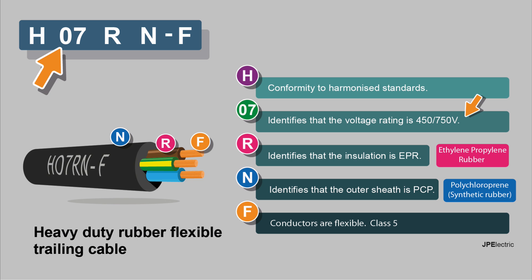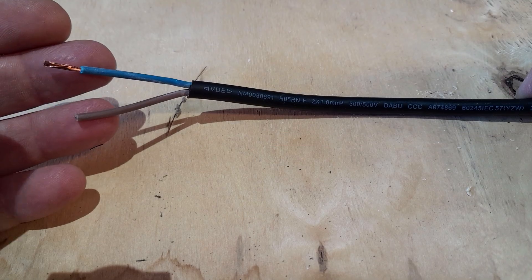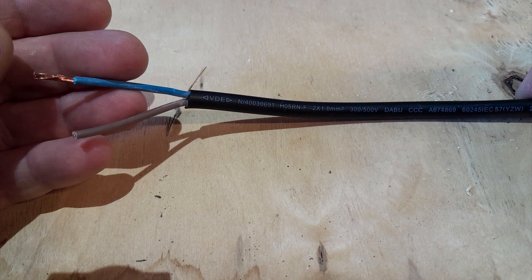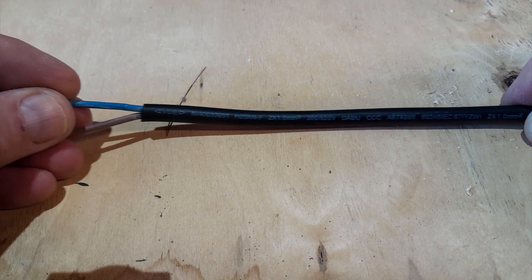Generally we have single or three-phase systems. H07RNF is a heavy-duty rubber flexible trailing cable. You often see it used in temporary power installations, outdoor events; it's also used in industry, commercial, and kitchens. You'll see it on heavy-duty catering equipment.